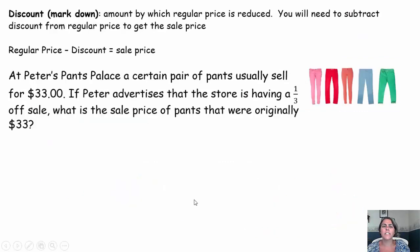Let's talk about discount or markdown. It's the amount by which a regular price is reduced. You need to subtract the discount from the regular price to get your sale price. So if you take your regular price minus your discount, you'll come up with the sale price. At Peter's Pants Palace, a certain pair of pants usually sells for $33. If Peter advertises that the store is having a one-third off sale, what is the sale price of pants that were originally $33?